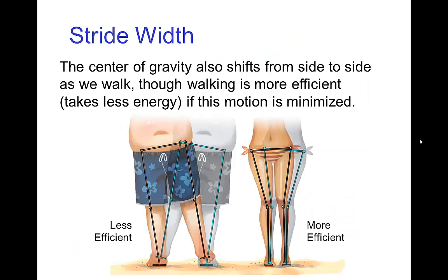Besides the up and down motion of the center of gravity, there's also some side-to-side motion as we walk. We tend to minimize that because it's less efficient to walk with a significant side-to-side motion — we have to exert more forces and it takes more energy. Although it's more efficient to minimize that side-to-side motion, there is still always a bit of it as we walk.